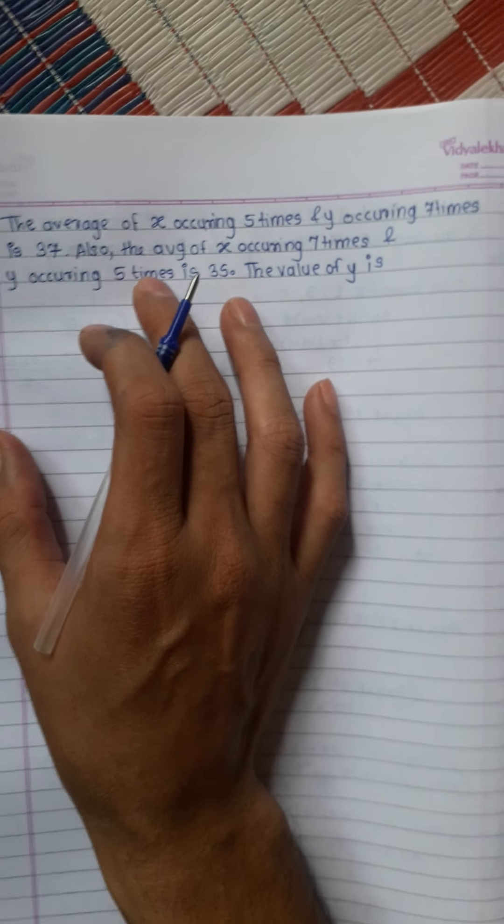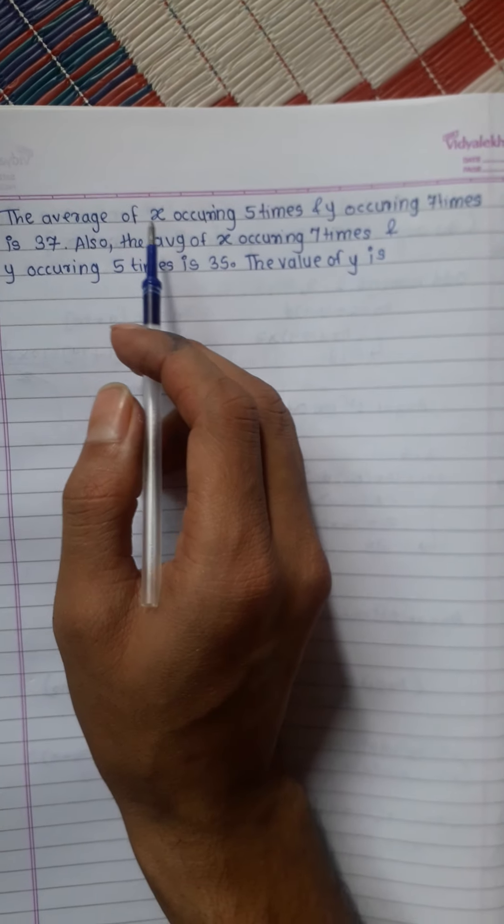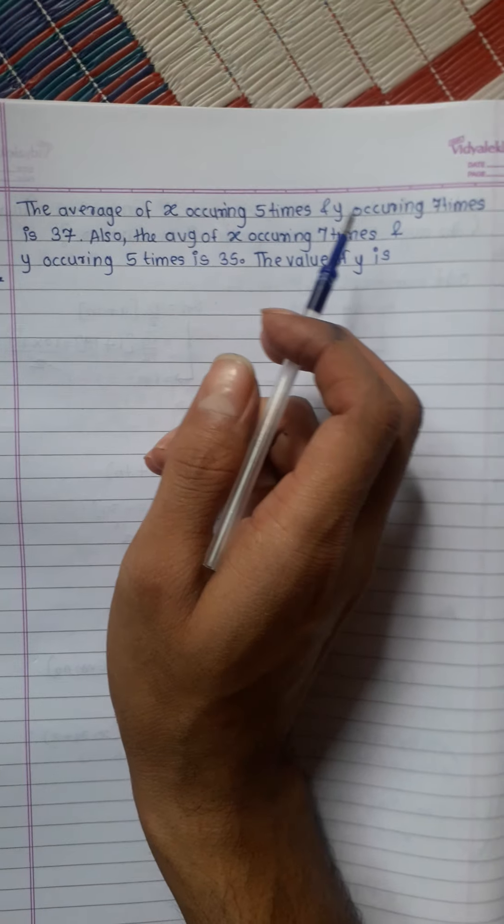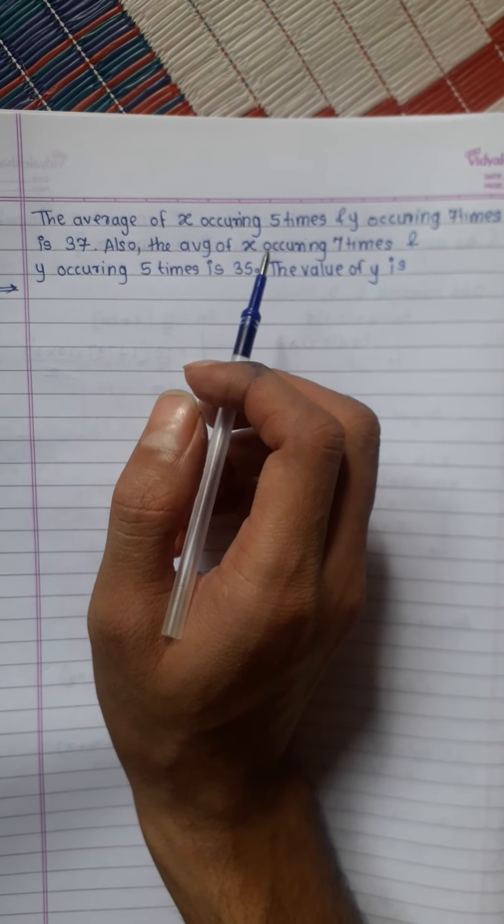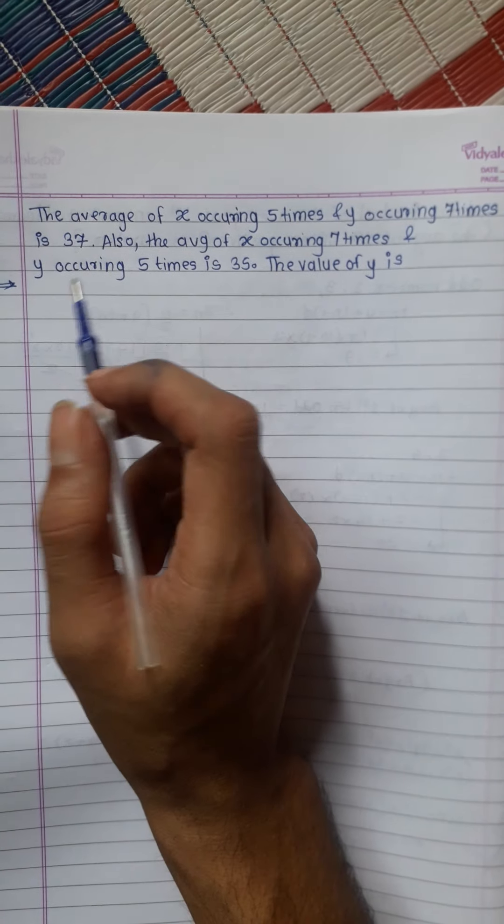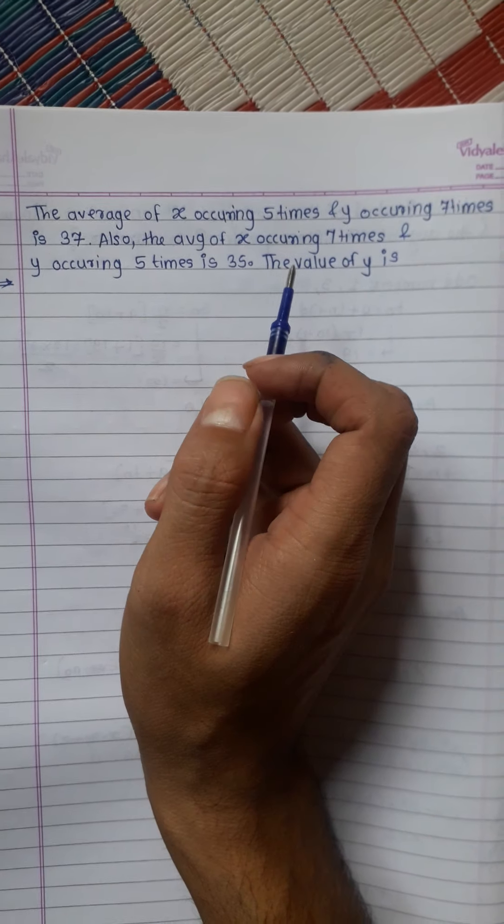Today we will solve this question on average. The average of x occurring 5 times and y occurring 7 times is 37. Also, the average of x occurring 7 times and y occurring 5 times is 35.